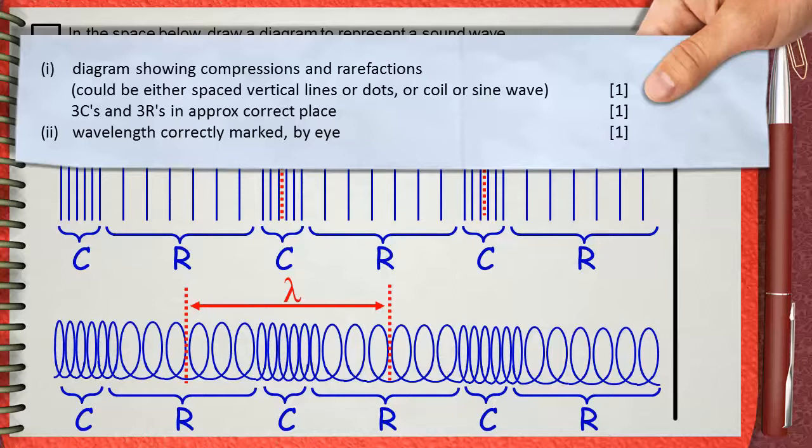This is for one mark. The second mark is for showing three compressions and rarefactions in approximately correct places. Part ii: one mark is given for showing the wavelength correctly by eye.